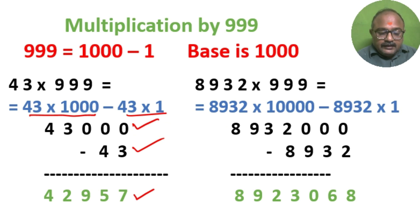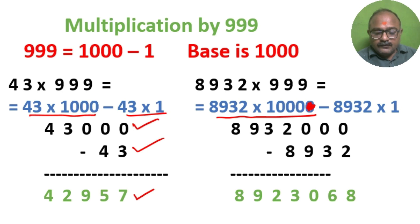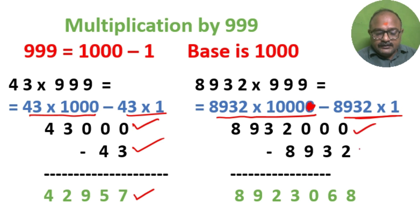8932 into 999: so 8932 into 1000 minus 8932 into 1. We get the required result by subtraction.